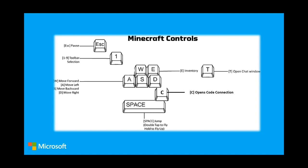To fly higher in the sky, double tap and hold the spacebar. Once your player has gone far enough up, let go and they will hover there. To come back to ground, double tap the spacebar once more and they will fall down - don't worry, your player won't hurt themselves. The last and most important key is C - think of C for code. When you press C, the code builder will open up, which is what we're going to use today to code our agent.